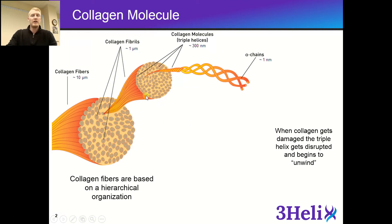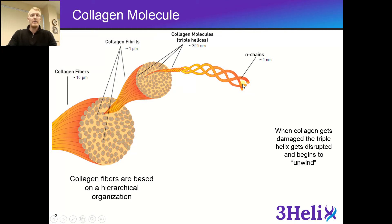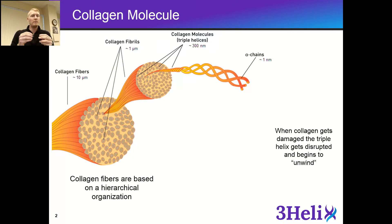The collagen fibers are actually based on a hierarchical organization structure, where you have the collagen fiber made up of these smaller fibrils, which are made up of the collagen triple helical molecules. The triple helices are actually made up of these smaller alpha chains, and you can think of this as kind of like a rope formed by three individual pieces of twine. When you have three pieces of twine, they come together, and this rope-like structure is much more strong and stable than each individual strand by itself.